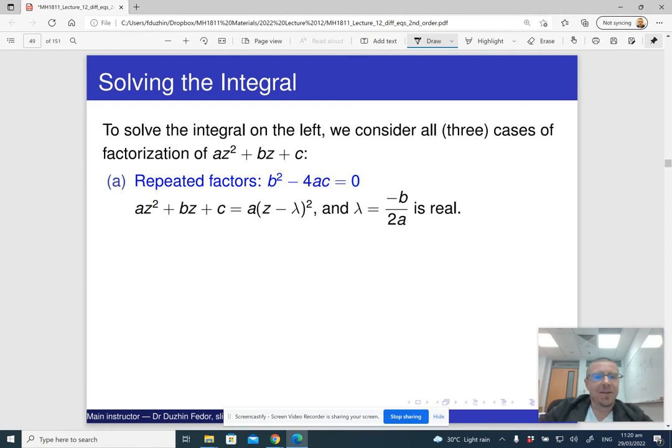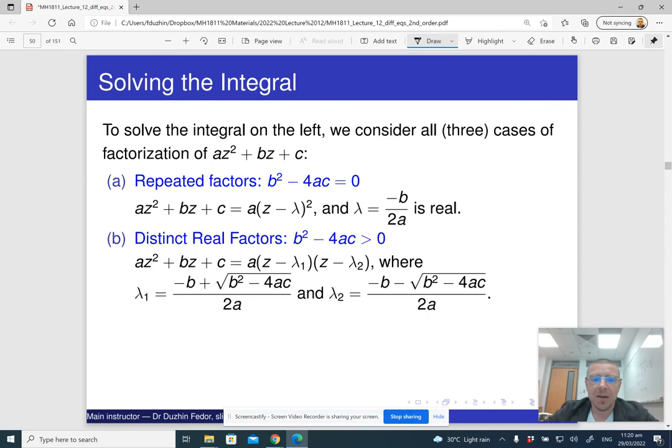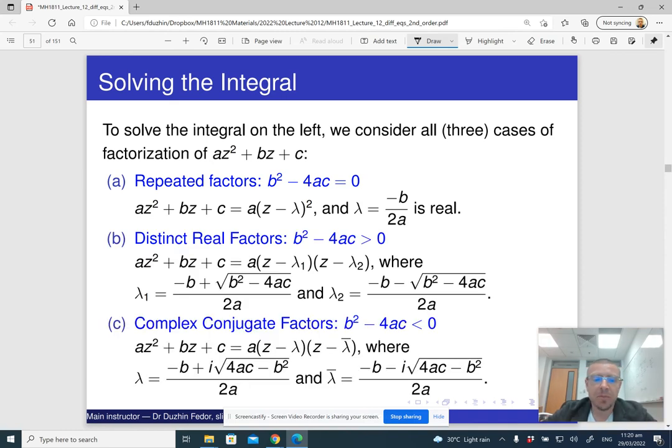Maybe let me mention that in this case, we have something like a(z - λ)². In this case, we do have all this.